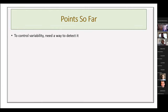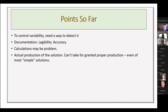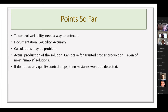The key point so far: to control variability, we have to detect it. Documentation issues are critically important to employers in the workplace. Calculations are often a problem. And we can't take for granted that students are producing solutions correctly — even the most sophisticated students will have problems with one or more solutions every year, even with something as simple as saline. If we don't do any quality control steps, we simply won't see the mistakes.